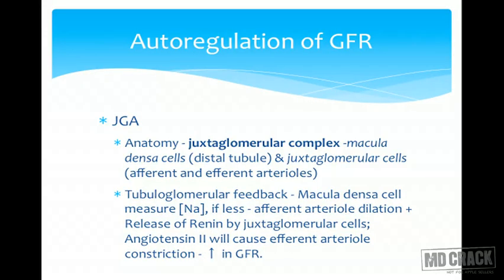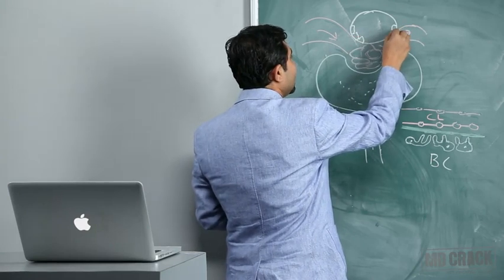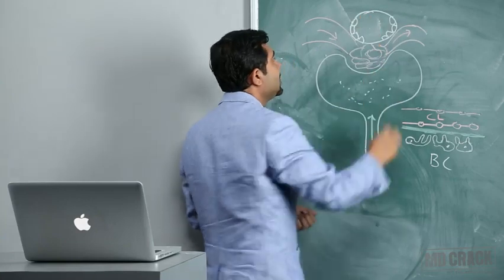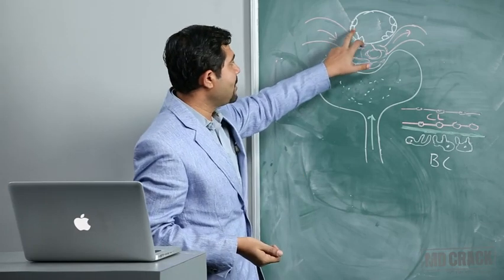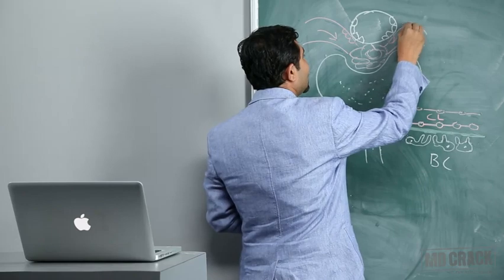One important mechanism of autoregulation is through the renin-angiotensin system via the juxtaglomerular apparatus (JGA). Recall that in nephron anatomy, the DCT passes between the afferent and efferent arterioles. These three structures together form the juxtaglomerular apparatus. The DCT contains special cells called macula densa cells, while special cells in contact with the arterioles are called juxtaglomerular cells.